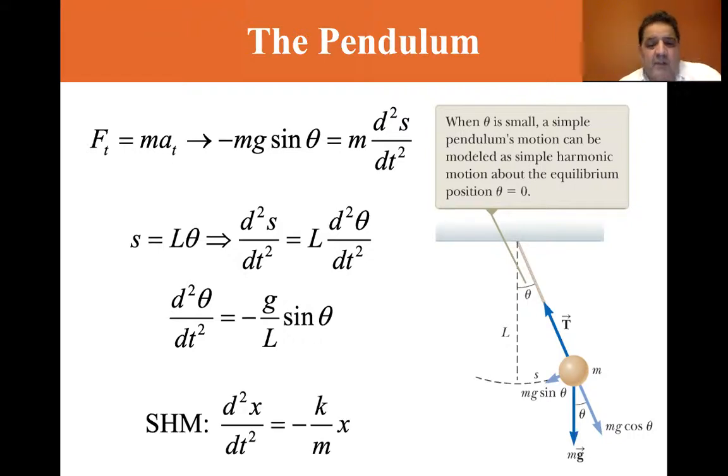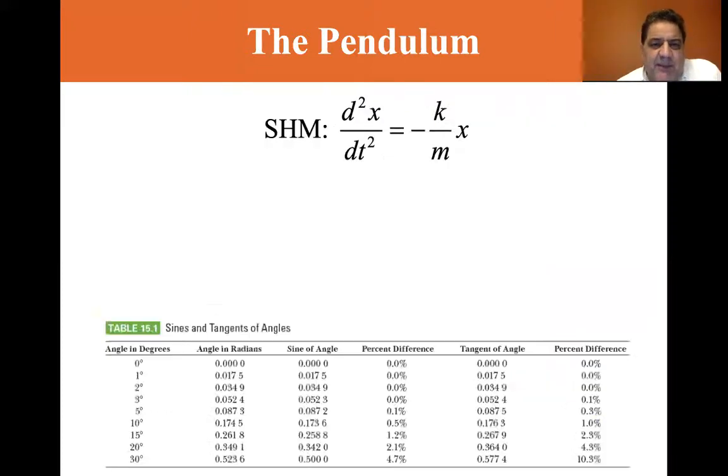And simple harmonic motion, d²x/dt² is equal to minus k/m x. So in this one, we have a sine theta. And in this one, we have an x. So they're not really the same. They're not the same. However,